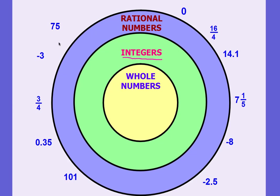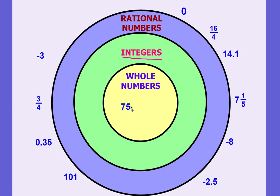Now I'm going to place these numbers where they best belong in the Venn diagram. Think about 75 — it's a whole number. The best classification is the whole number circle. But you can tell the whole number circle is inside the integer circle, so 75 is also classified as an integer. And since the integer circle is inside the rational number circle, 75 is also a rational number. So 75 is a whole number, an integer, and a rational number — but the best classification is whole numbers.